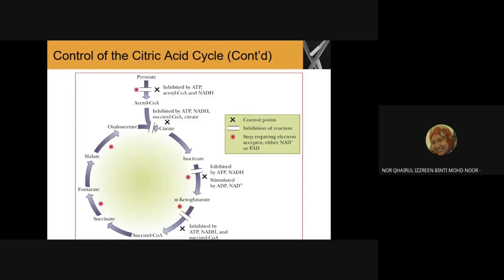Next is alpha-ketoglutarate dehydrogenase. How can we regulate this enzyme at step three of the TCA cycle? This enzyme is an allosteric enzyme that catalyzes the second oxidative decarboxylation. Alpha-ketoglutarate loses a carbon dioxide molecule and reacts with coenzyme A to form succinyl-CoA, similar to the pyruvate dehydrogenase complex.